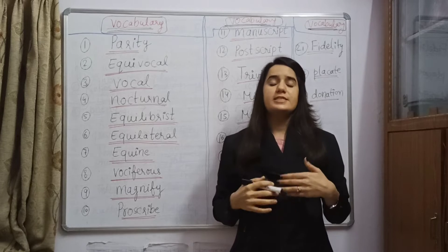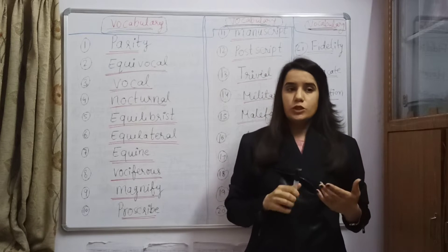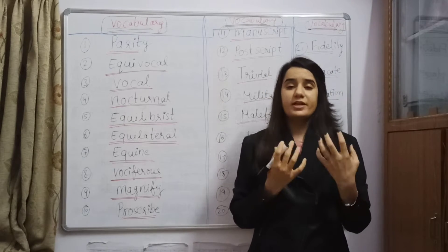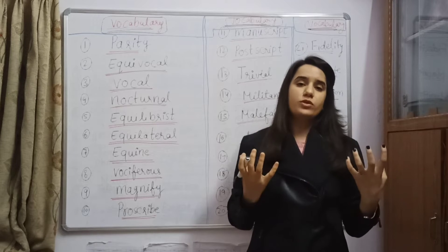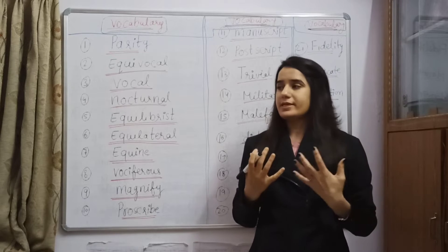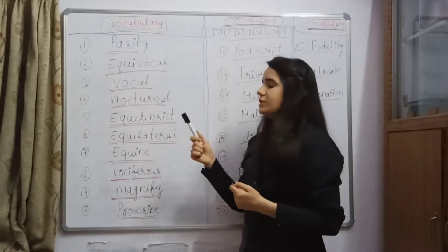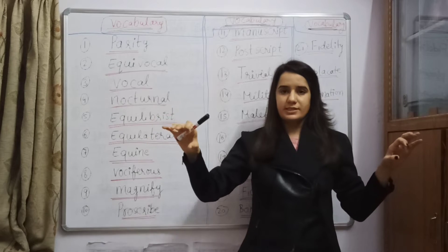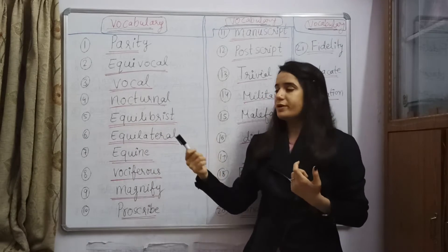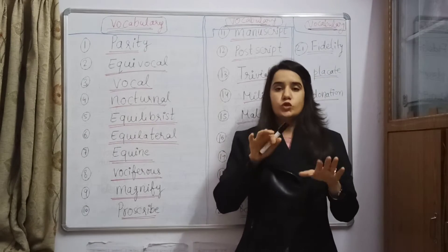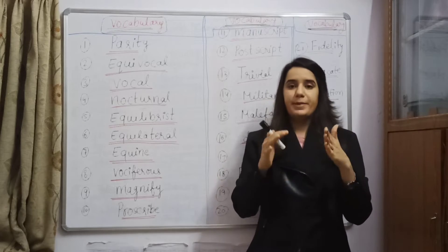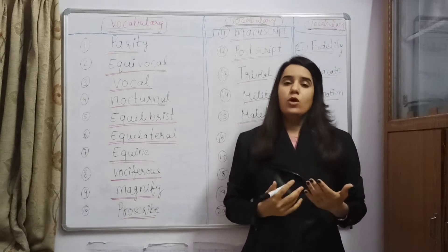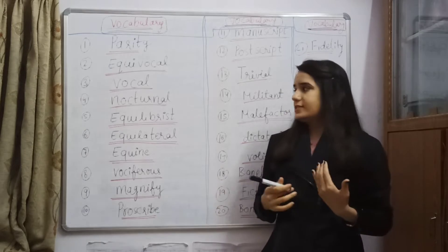Fourth is nocturnal. The one who flourishes at night or who succeeds at night — we will say it is a nocturnal theme. Like there are some flowers which flourish at night and grow in the night; they are nocturnal flowers. Fifth is equilibrist. Equilibrist is the person who can walk on a tightrope. The tightrope walker is the equilibrist person.